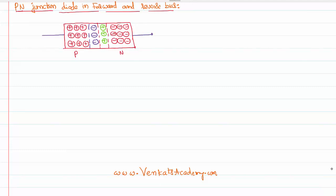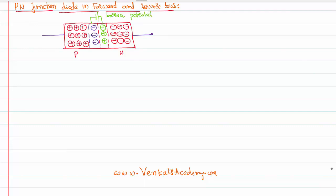Thus a reverse potential is generated at the junction. This region starts behaving like a negative plate of a battery on one side and a positive plate of a battery on the other side. This reverse potential is generated and is called the barrier potential.